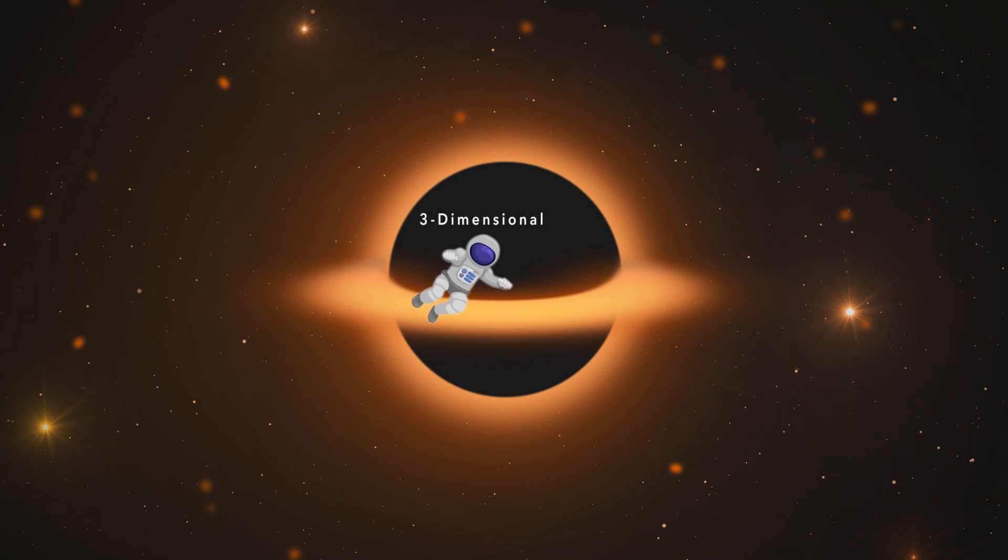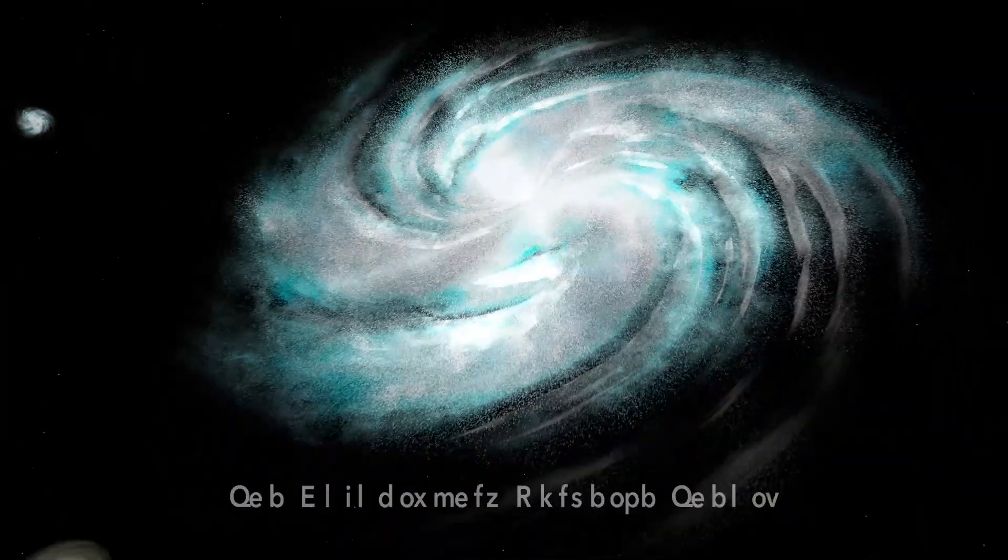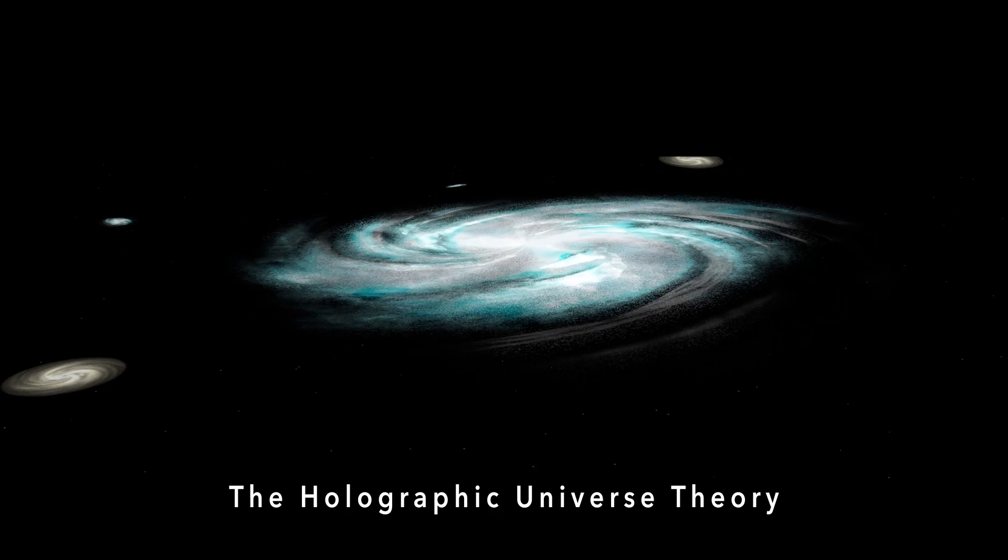If a black hole can encode 3D information on a two-dimensional event horizon, there's no reason to believe our universe can't be a flat two-dimensional image as well. We could all be living in a hologram.